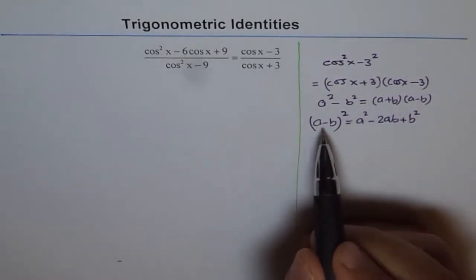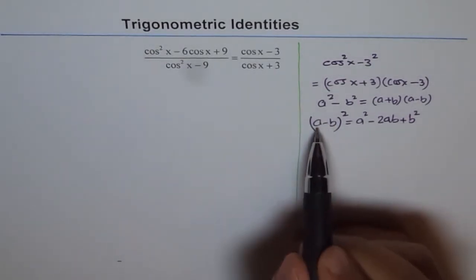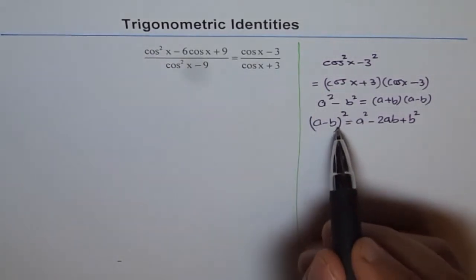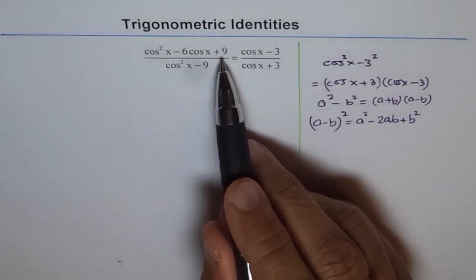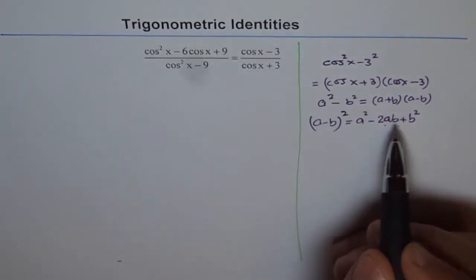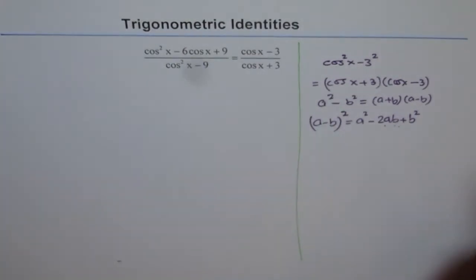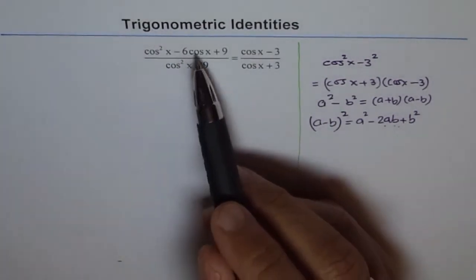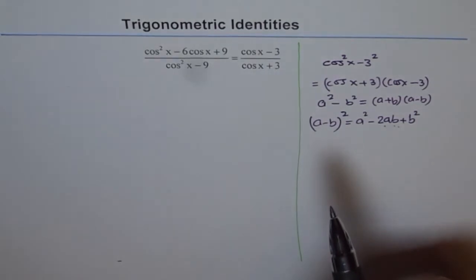So a square, now here, a is cos x for us and b is 3 for us. So 3 square is 9, right? And 2 times 3 times cos x is minus 6 cos x. So that is how I am seeing the numerator of left side.